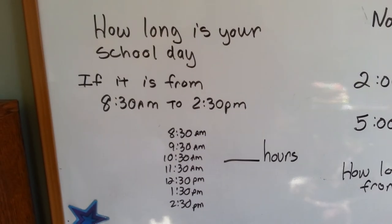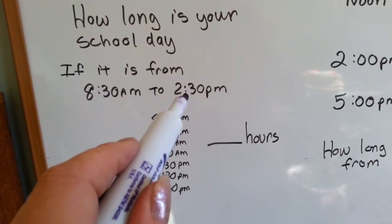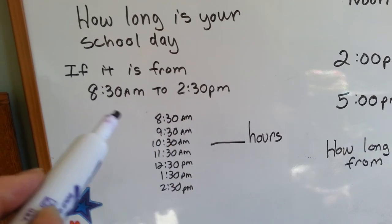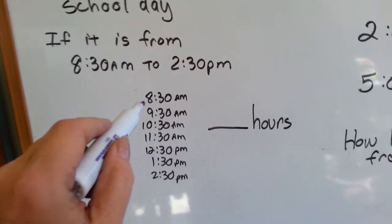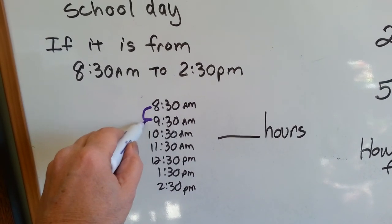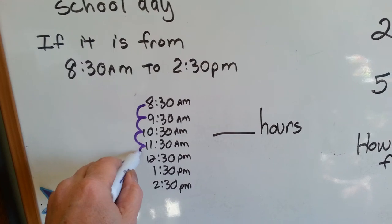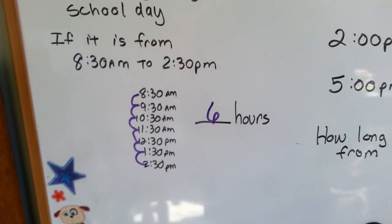How about this one? How long is your school day if it's from 8:30 in the morning to 2:30 in the afternoon, a.m. to p.m.? Well, let's count. We'll start at 8:30 and we'll go to 2:30. 1, 2, 3, 4, 5, 6. 6 hours at school. See that?